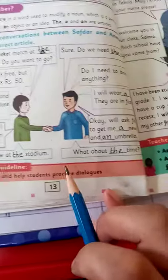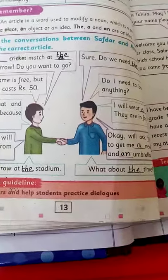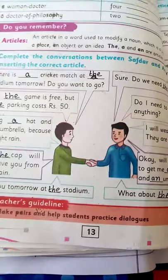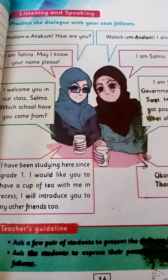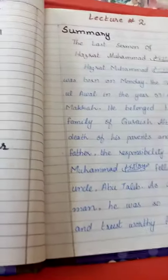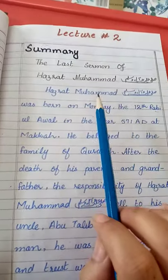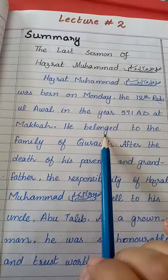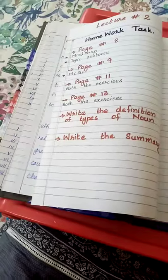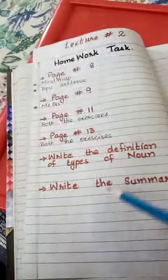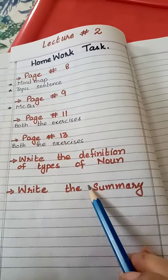You can also practice this dialogue conversation with a sibling, brother, sister, or any fellow student. Page 14 is a reading task — practice it with a partner. This lesson is now complete. I have written a summary for you and will share the picture at the end of this lecture. All of these are written tasks that you are going to do in your notebooks.